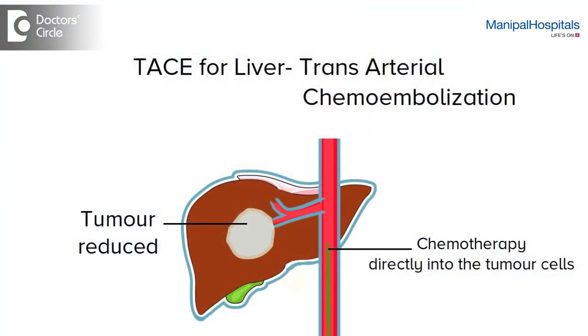TACE stands for trans-arterial chemoembolization. A catheter is inserted into your groin, that is the femoral artery, and the catheter is forwarded to the hepatic artery and straight to the tumour, and chemotherapy particles are injected through this catheter.